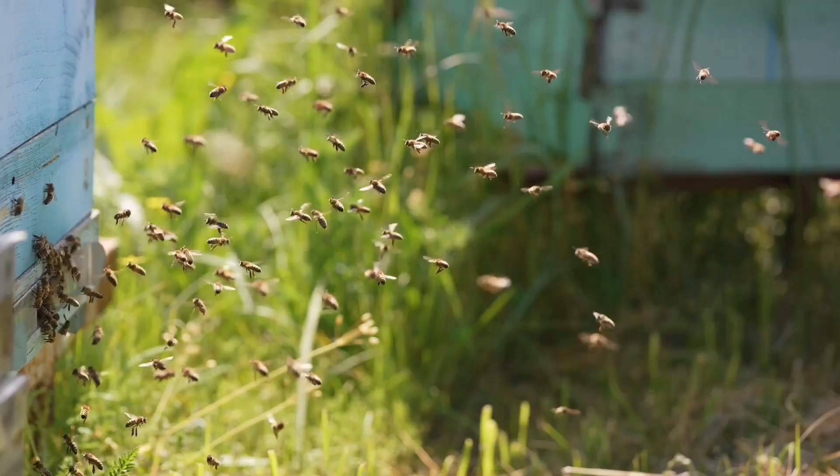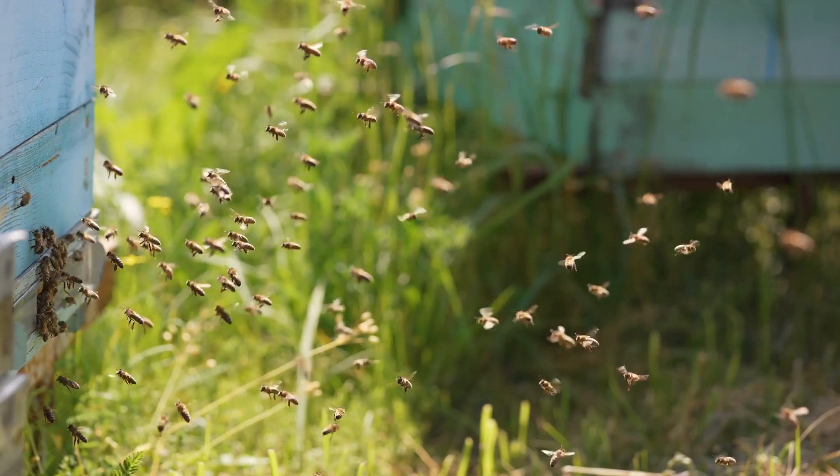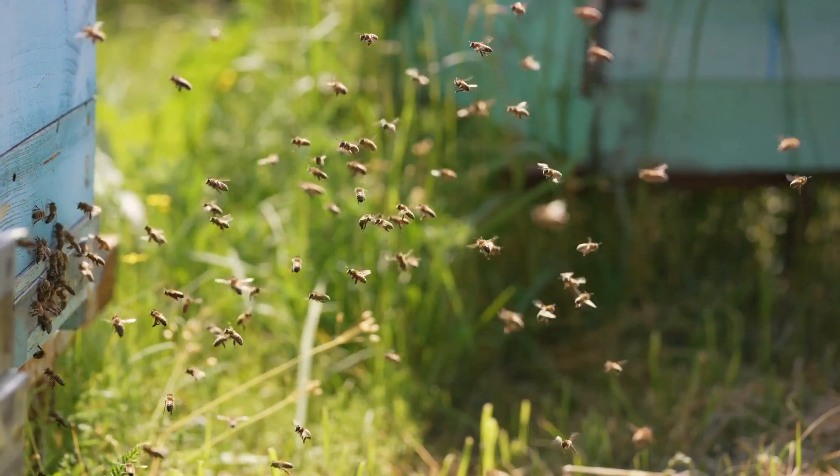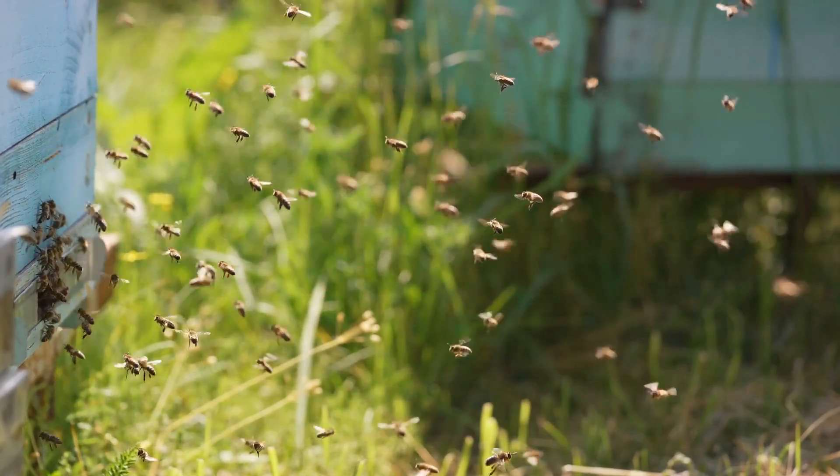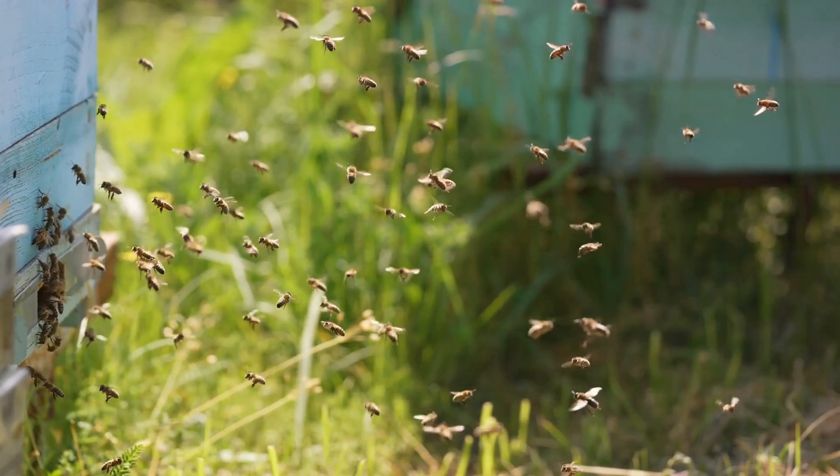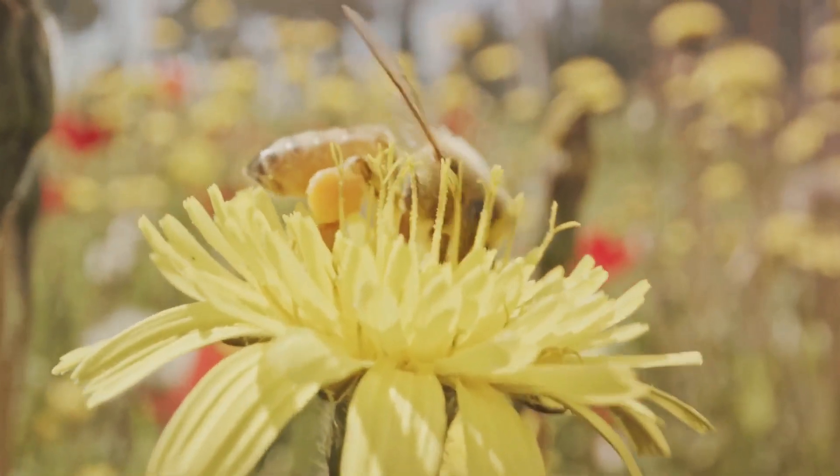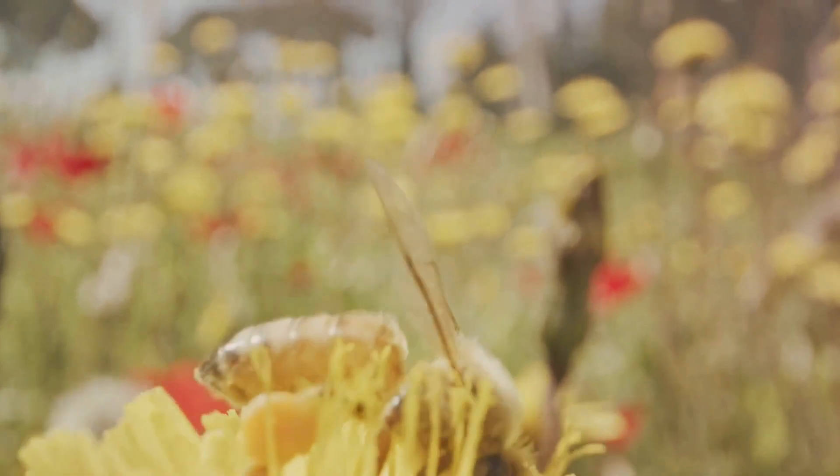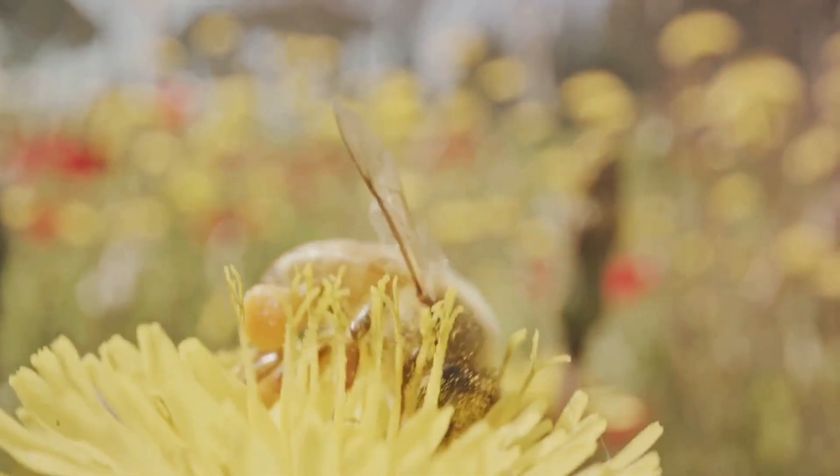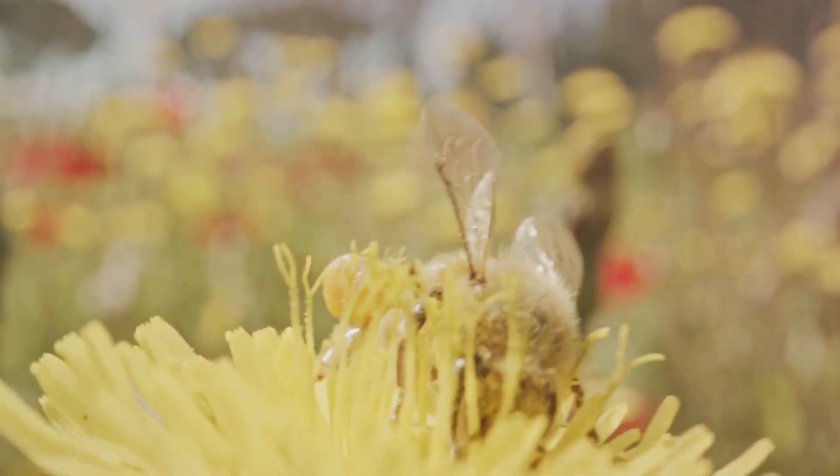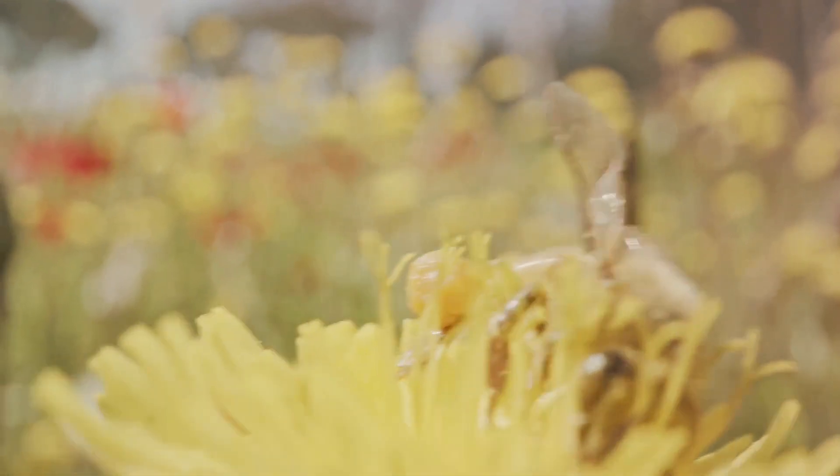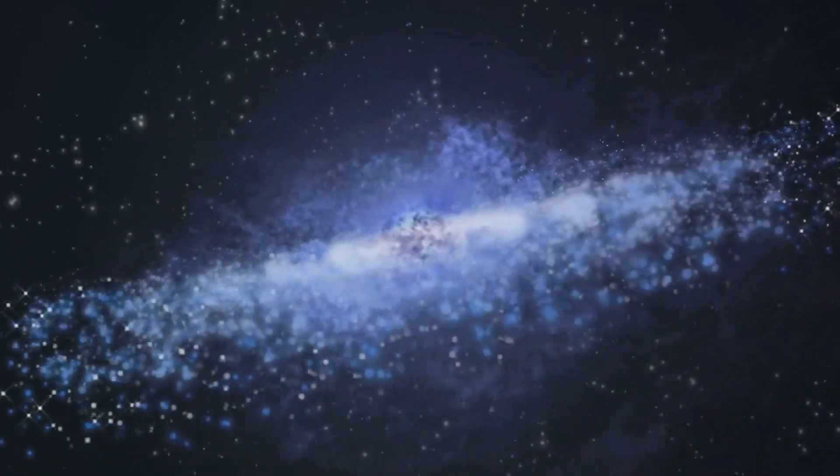Now imagine these waves as a swarm of energetic bees buzzing around our plates. Between the plates, where the space is tight, only the smallest, least energetic bees can fit. Outside, where there's more space, both small and large bees buzz freely. This creates more pressure on the outside, pushing the plates together. That's the Casimir Effect, a manifestation of quantum fluctuations.